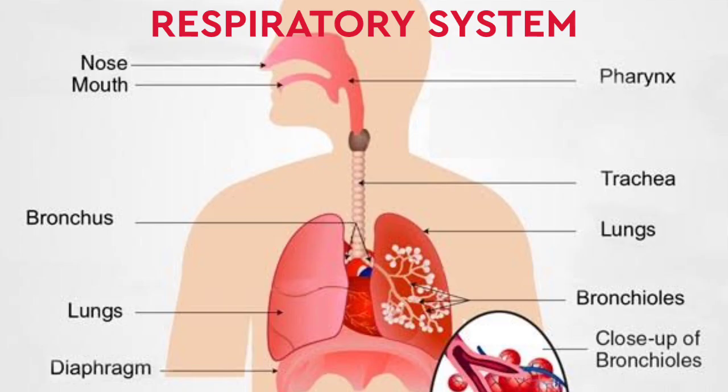The respiratory system — how many parts are being used in the respiratory system? Nose, mouth, throat, larynx, windpipe, bronchi, large airways, bronchioles (small airways), and lungs.